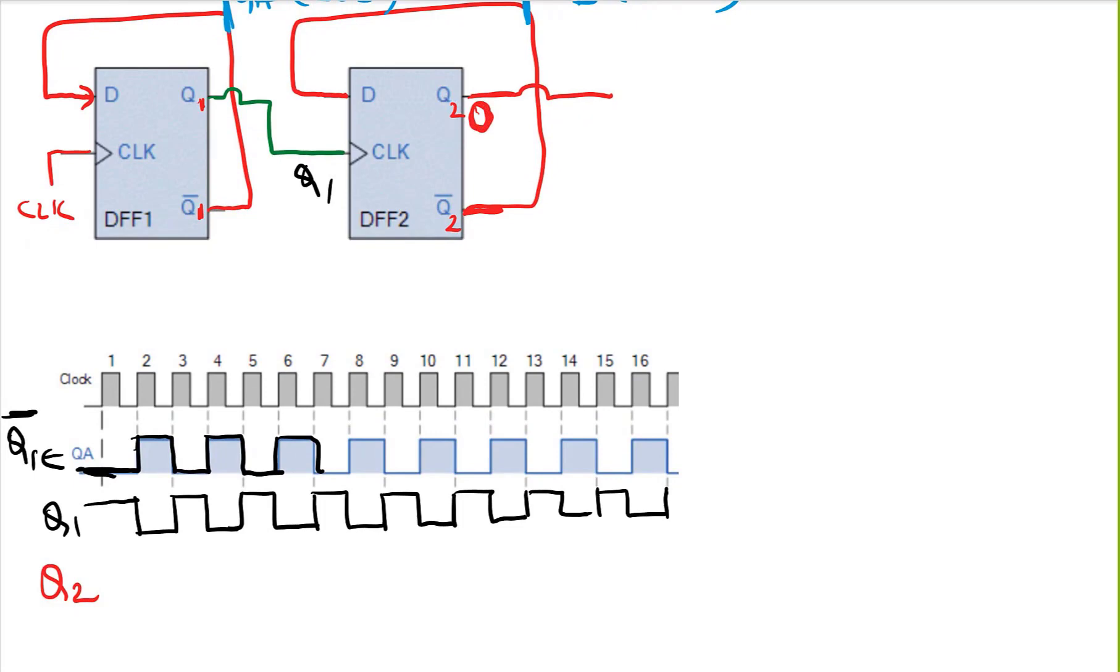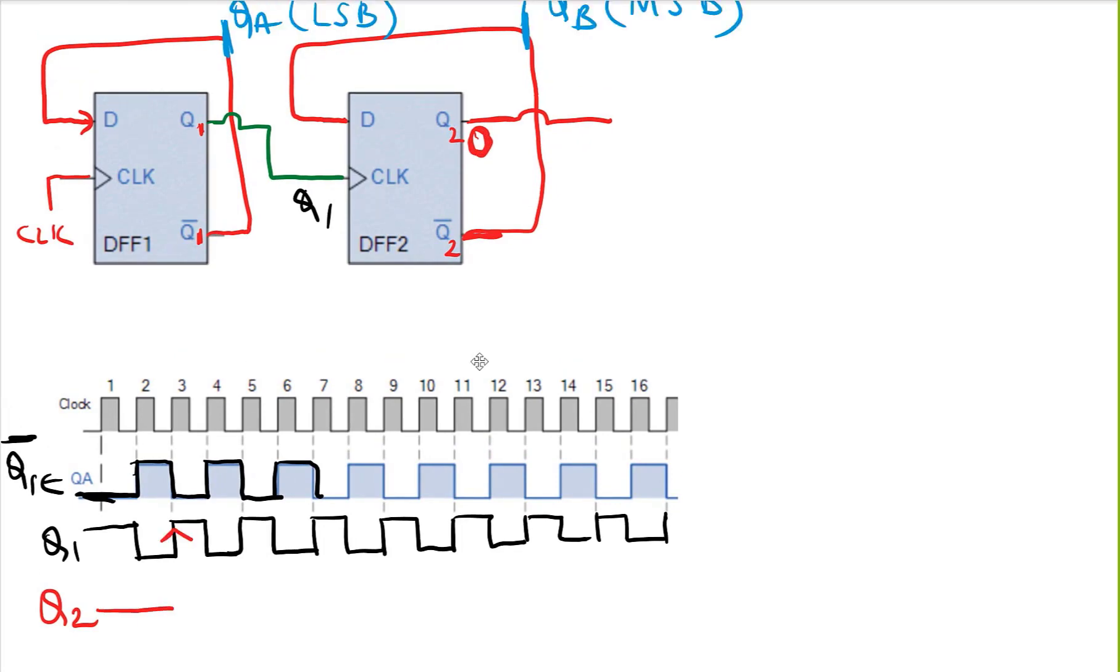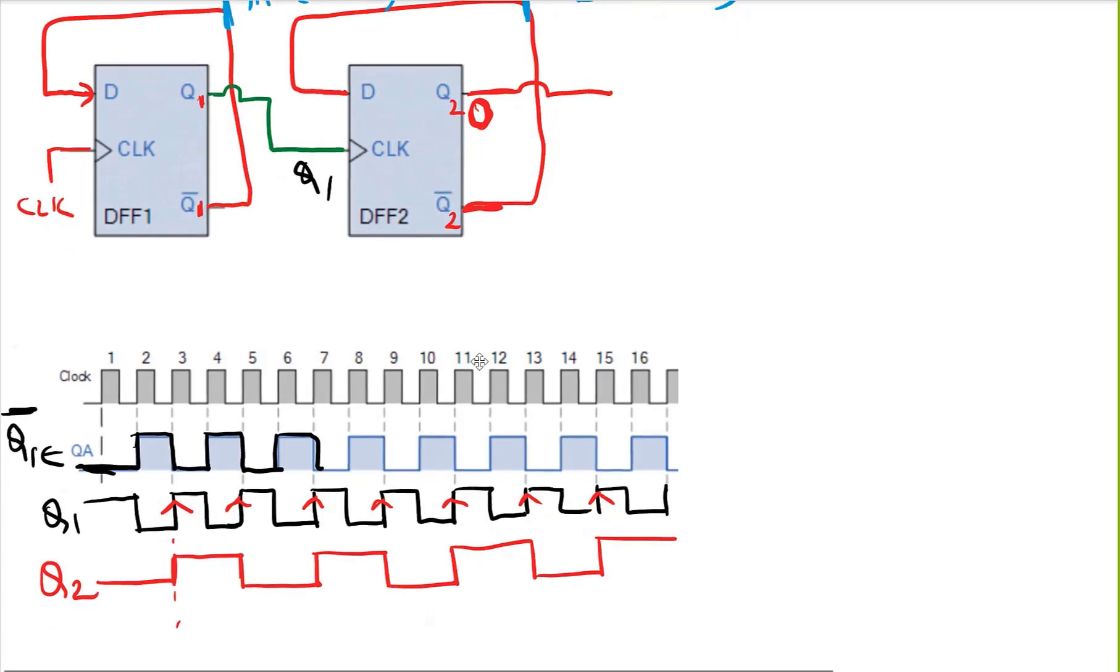Initially we assume we resetted our flip-flops and initially it is 0. I will be looking at the rising edge of Q1. On this rising edge, Q2 is getting not of Q2. Q2 was initially 0 and Q2-not was initially 1, so this will become 1 here, and then it will become 0 here, 1 here, 0 here, 1 here, 0 here. This is my Q2.